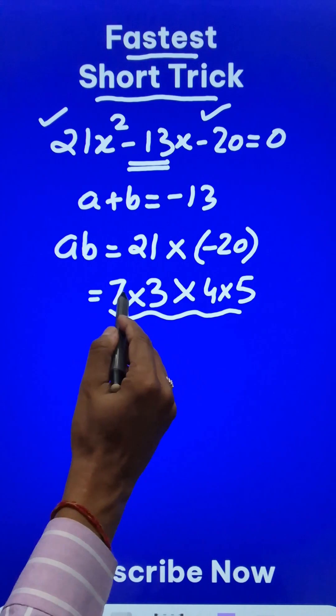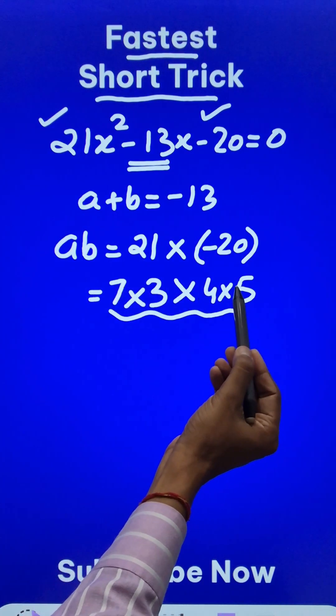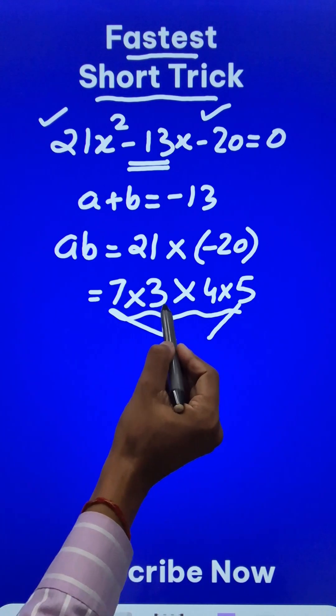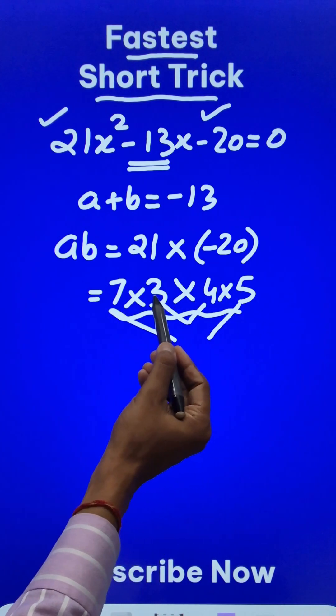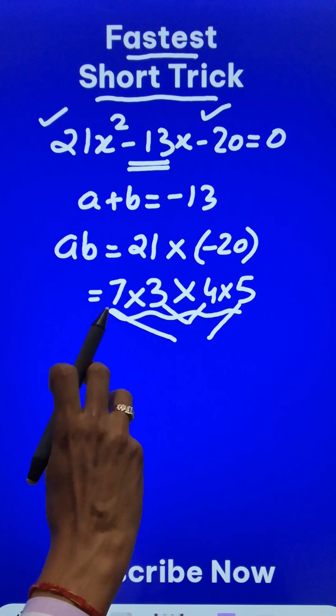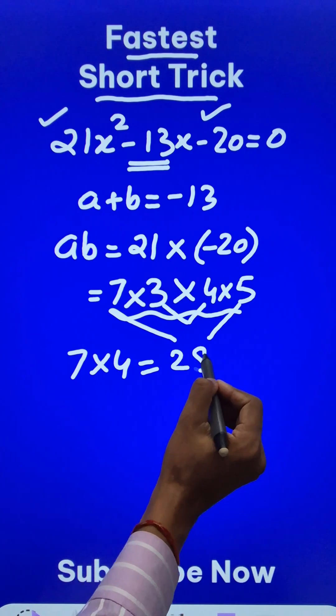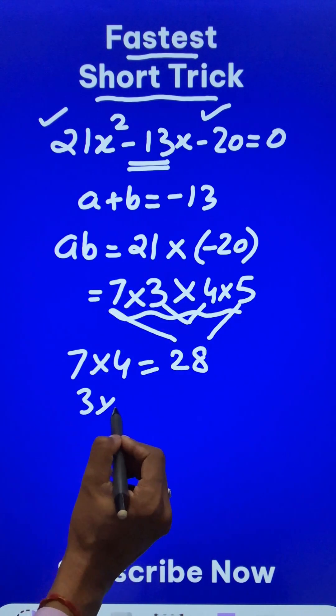Now we have four numbers but we want only two numbers. We'll regroup them. 21 and 20 doesn't work. Let's try 35 and 12—that won't give me 13 on addition or subtraction. So I need to do some trial and error. Let's try 7 × 4, which gives 28, and 3 × 5, which gives 15.